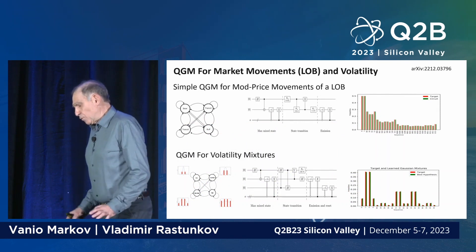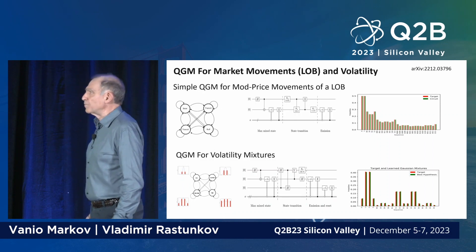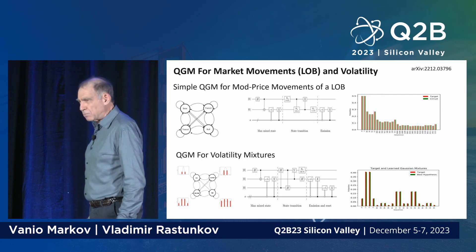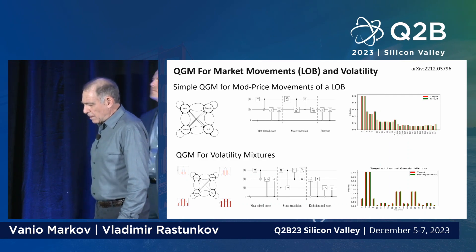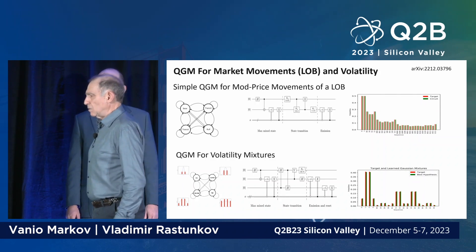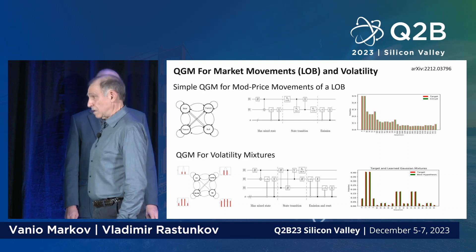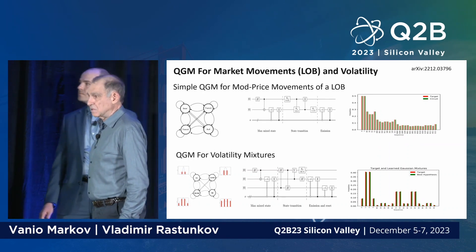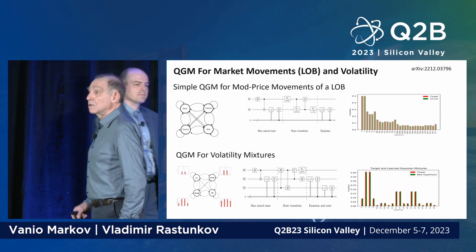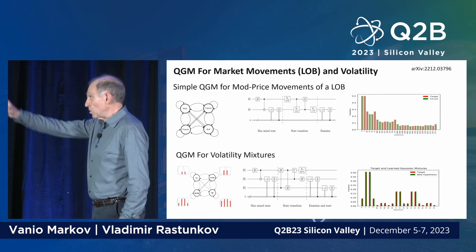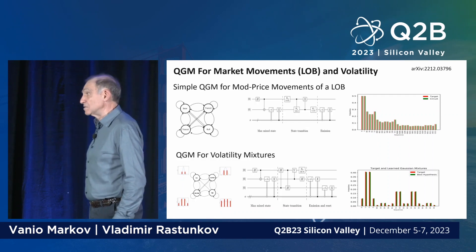We have employed this mostly for market price modeling, especially a statistic called mid-price. The mid-price is a statistic of a financial vehicle called the limit order book — it is the average between the best ask and the best bid for a particular security. This is an extremely quickly changing process, changing at nanosecond timescales. We model it at a second-level resolution using particular technology to integrate the measurements, giving us around 14,000 measurements per day. We have also applied this technology to model market volatility. Even for simple cases, we get pretty simple circuits to model these processes.